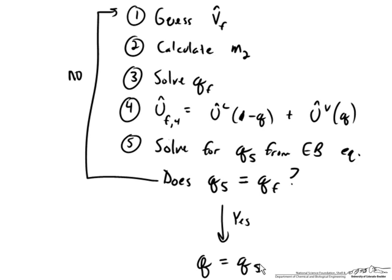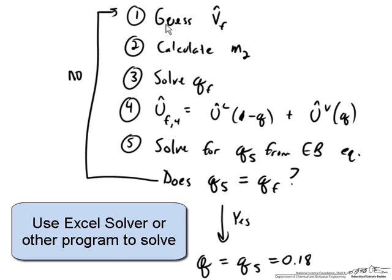If I do this process, the final quality I get is approximately 0.18, and it turns out we've added about 0.18 kg from those lines. The easiest way to set this up is in an Excel spreadsheet: guess V_F and then use Solver or similar methods to keep varying V_F until you get very little difference between the q evaluated in step 5 and step 3.